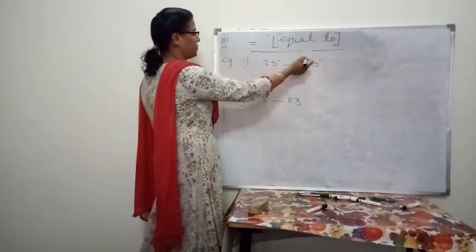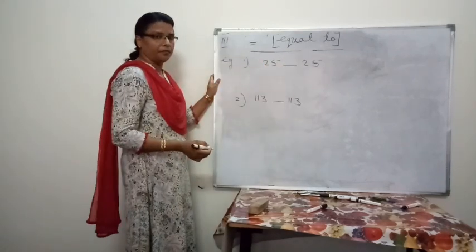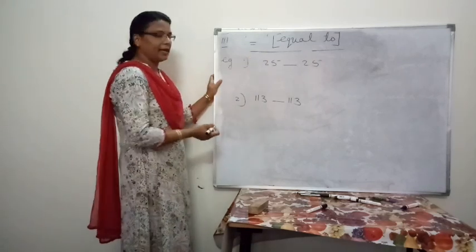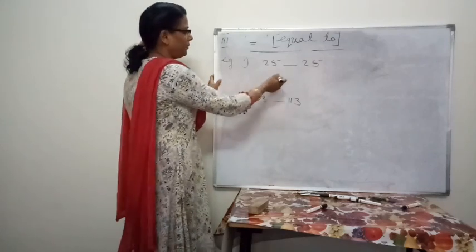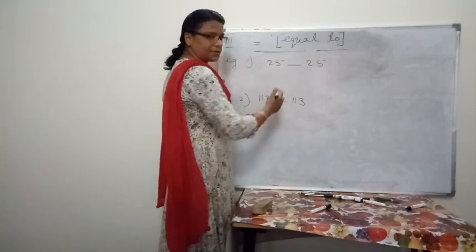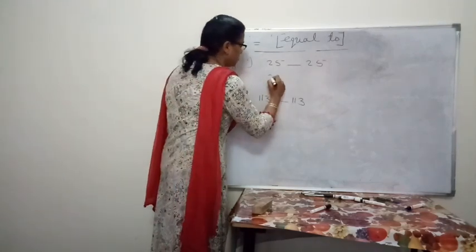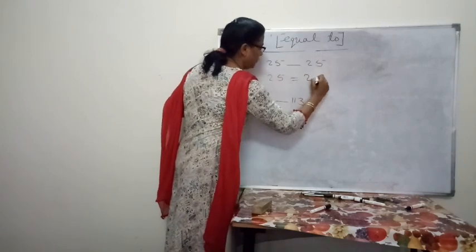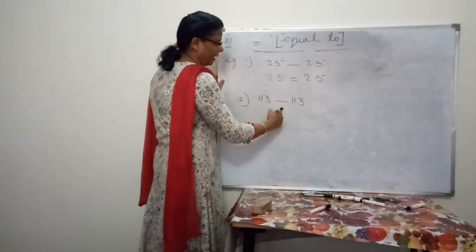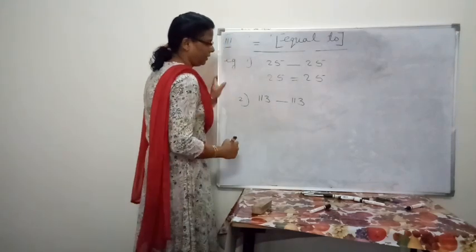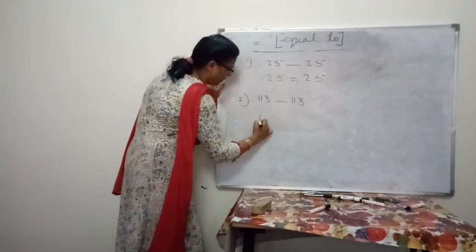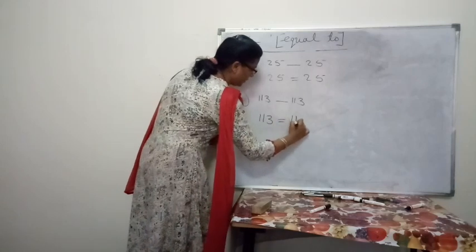The third symbol is equal to. If two numbers are equal, we use the symbol equal to to express it. For example, 25 and 25 — both numbers are the same, so we write: 25 is equal to 25. Another example: 113 and 113 — both numbers are the same, so we write: 113 is equal to 113.